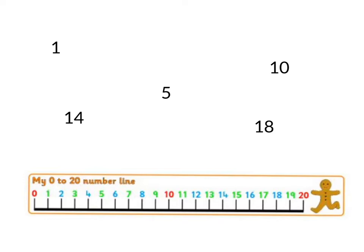Which one comes next? Have a look along the number line. The next number is 5. Look along the number line again. What's the next number after 5? The next one is 10. Look at the number line again. Which number will come next? The next one is 14.